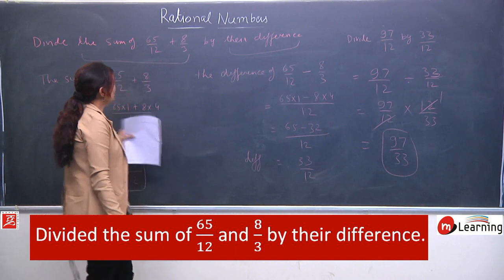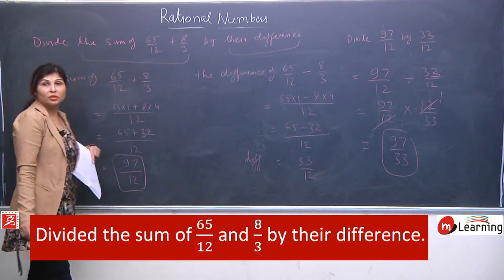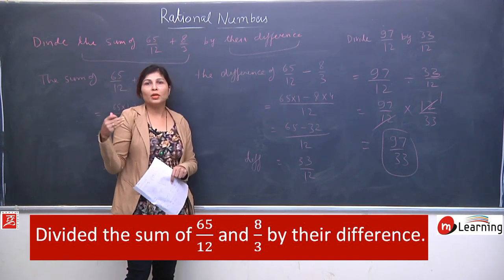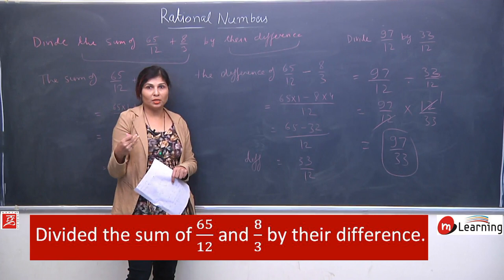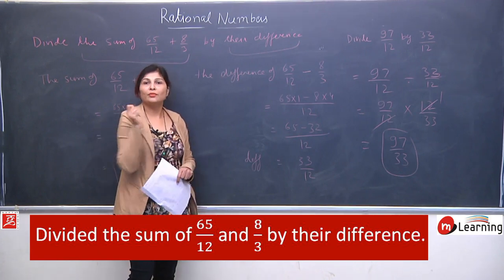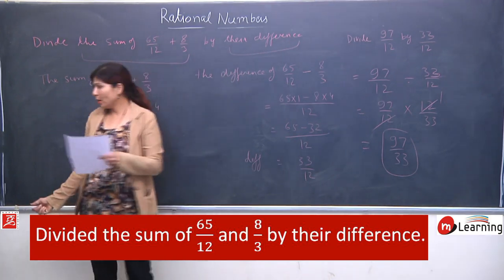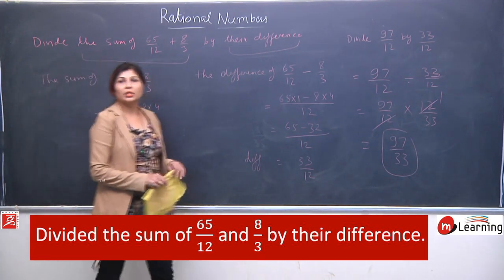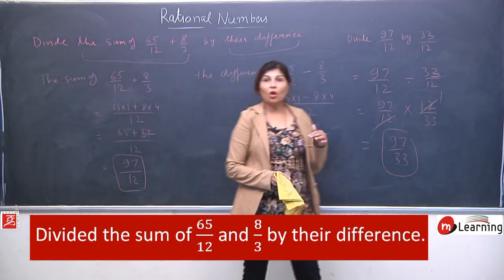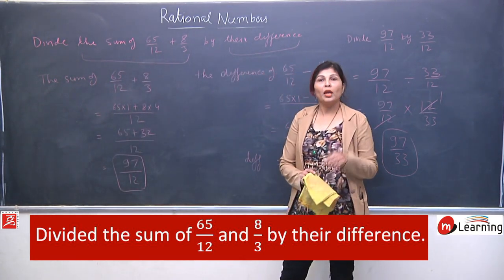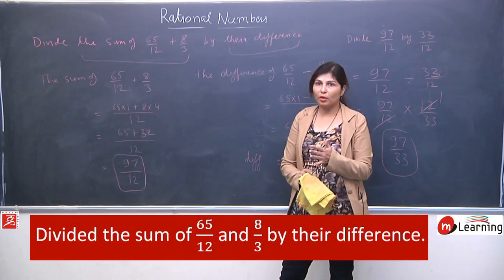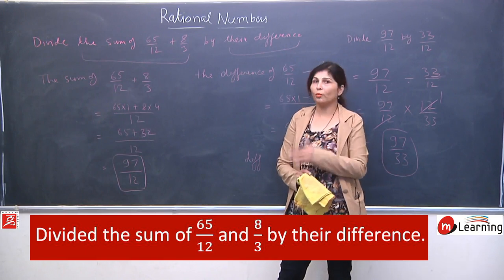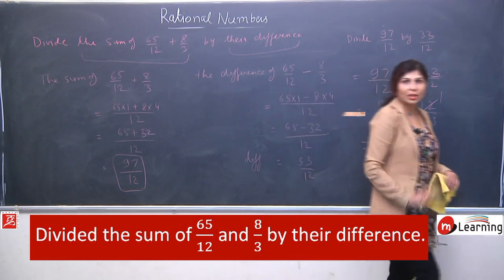So question tha: divide the sum of so and so terms by their difference. Toh hum ne kya kiya? Wo terms ka sum bhi nikaal liya, so and so terms ka difference bhi nikaal liya, aur question as it is frame karke solve kar diya. So students, abhi hum ne bahut saari sums practice ke liye liyi hain. I hope ke aapko plus, minus, into and divide — saare operations rational numbers pe kaise apply hote hain, as well as properties kaise apply hoti hain — us tarike ke maine saare question liye hain. Kuch easy liye, kuch thode complicated liye — so I hope ke aap enjoy karenge is chapter ko.